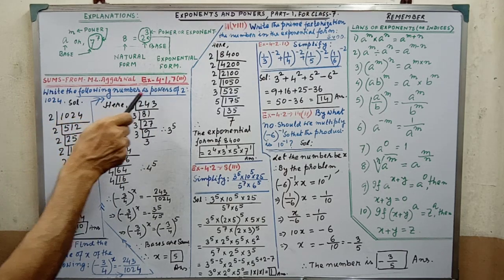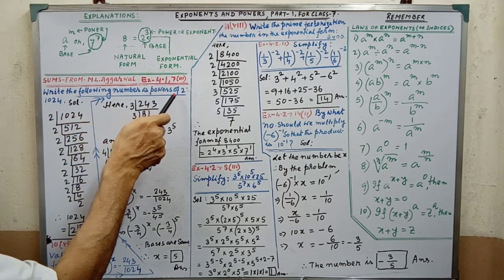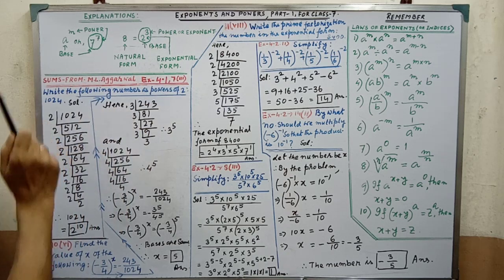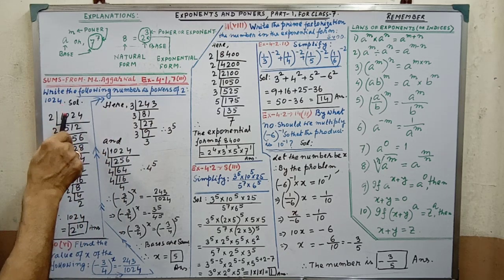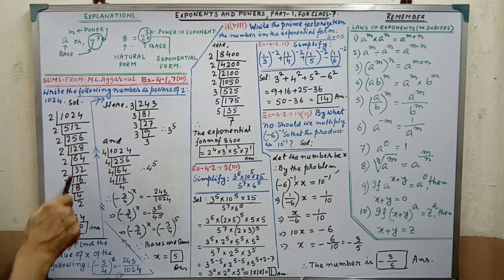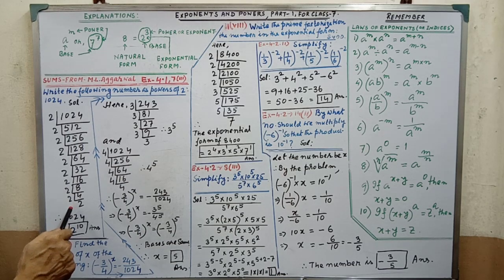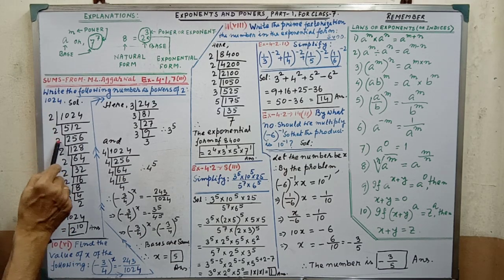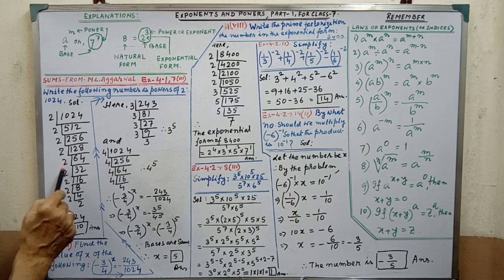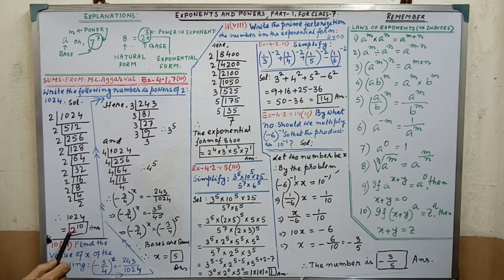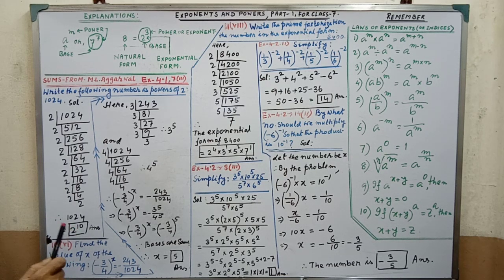Write the following number as a power of 2: 1024. You have to do the prime factorization using LCM. After factorization, you will get the factors. Count how many 2s you get: 1, 2, 3, 4, 5, 6, 7, 8, 9, 10. So 1024 equals 2 to the power 10. This is the exponential form, or power of 2.